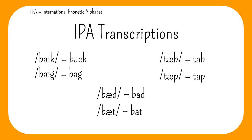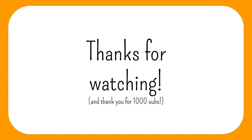It may seem as if voicing shouldn't really make a huge difference in the way a sound is made, and it doesn't tend to when we're talking about regional variations. But if you look at a few IPA transcriptions of English words, you can tell that the meaning will be completely altered with just a simple change in voicing. Here you can see how the plosives are transcribed, and examples of how they would be transcribed in spoken English. Thank you for watching, and I'll see you next time.